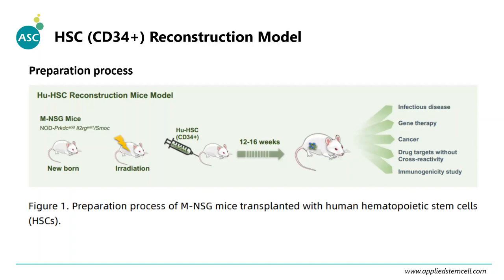The flowchart for preparing HSC CD34-reconstituted mice shows that NSG mice are irradiated and then transplanted with human CD34 cells via IV injection. Because it takes time to reconstruct the human hematopoietic stem cell system, the whole process takes three to four months.